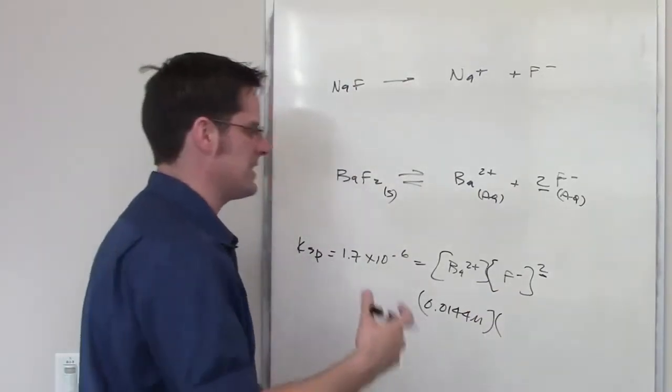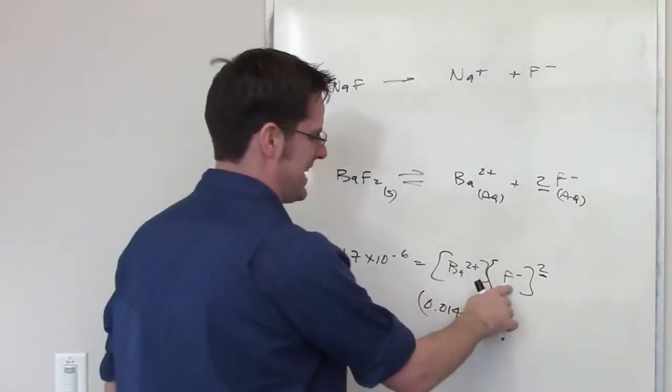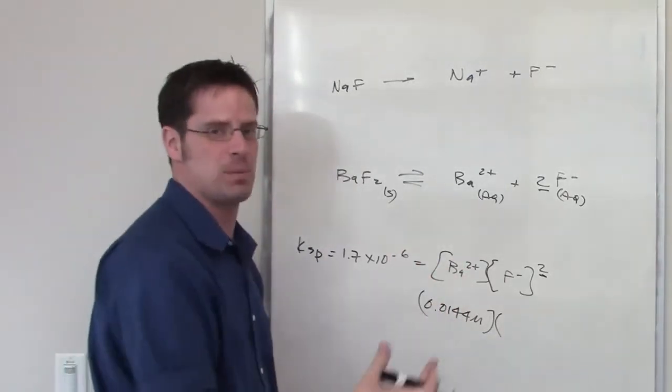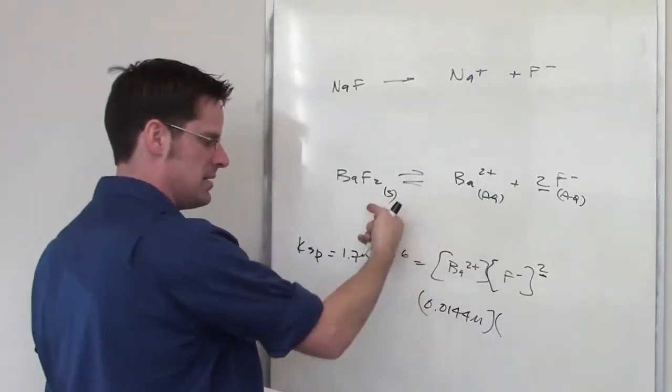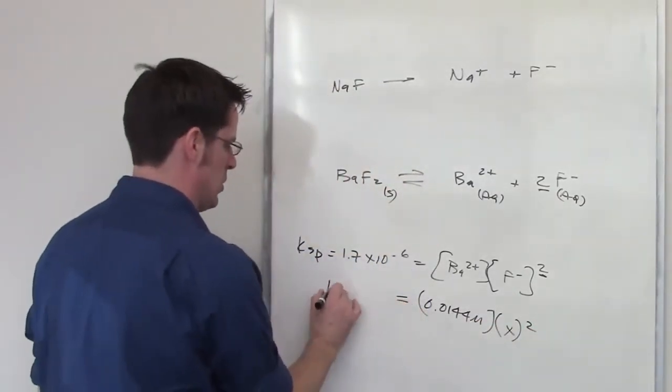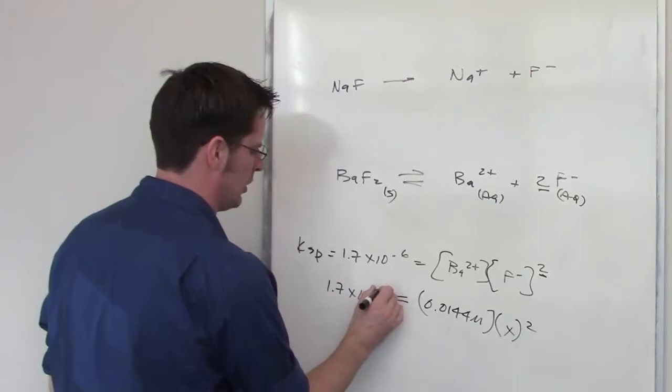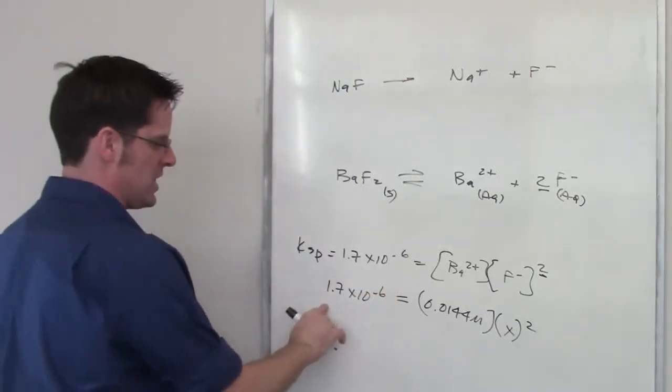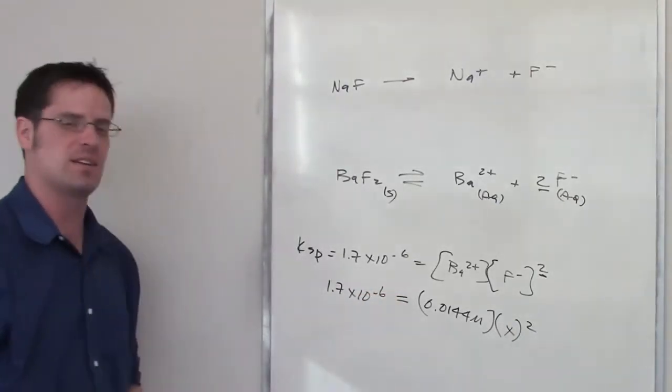It's asking me what the value of F minus has to be in order to get precipitation to occur. That value, which I'll call X, is basically any value that ends up giving a number larger than this number, 1.7 times 10 to the negative 6.